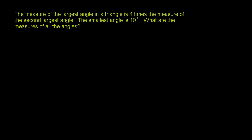I'll do some more example problems involving triangles. This first one says: the measure of the largest angle in a triangle is four times the measure of the second largest angle. The smallest angle is 10 degrees. What are the measures of all the angles?